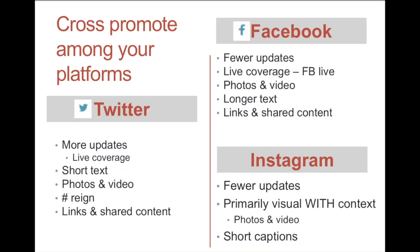Instagram: it's okay to use more hashtags. Cross-promote among your platforms — this is really important and effective as professional communicators. Twitter is more for constant updates, short text, photos, video, and the hashtag is really king on Twitter — links and shared content, all that we push out with Twitter. Facebook: fewer updates, so you're not likely to update Facebook 10 times within an hour or two. That's not effective, but we do like Facebook Live — that's a good way to share something going on. We also like photos and video there; a little bit longer text works and links and shared content as well. Instagram is definitely a different animal — many fewer updates. Primarily it's a visual platform, so it's more about the beautiful image or video and short captions, but we do like context. Don't just throw a photo out there and give no idea — for this type of communication, context is important.